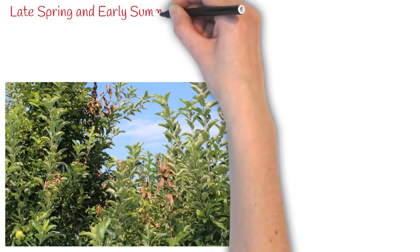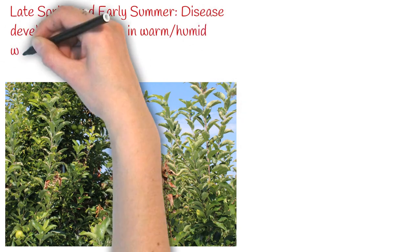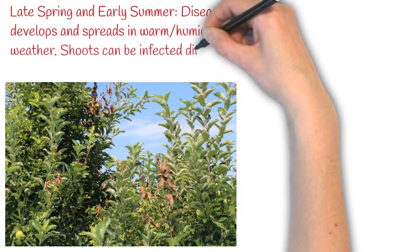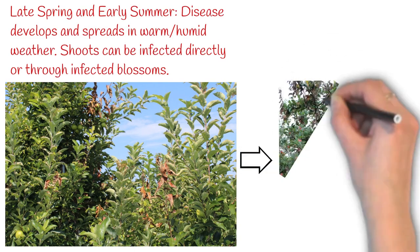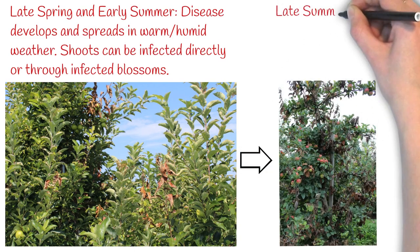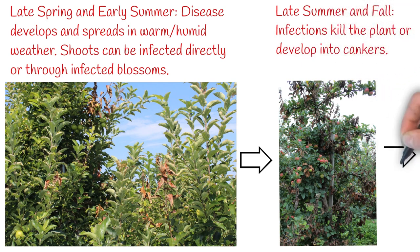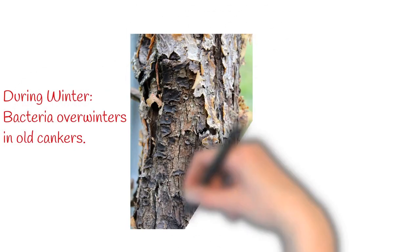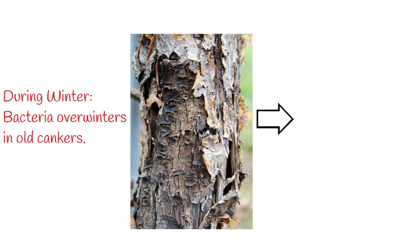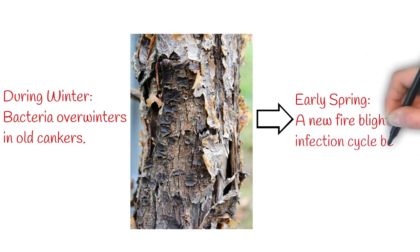Late spring and early summer, disease develops and spreads in warm, humid weather. Shoots can be infected directly or through infected blossoms. Late summer and fall, infections kill the plant or develop into cankers. During winter, bacteria overwinters in old cankers, and early spring a new fire blight infection cycle begins.